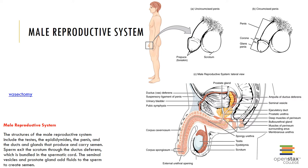The prostate secretions contain seminal plasmin, an antibiotic protein that may help prevent urinary tract infections in males. The bulbourethral glands are paired glands located at the bulb of the penis, also called Cowper's glands, and produce a thick alkaline fluid that lubricates the tip of the penis and neutralizes urinary acids.